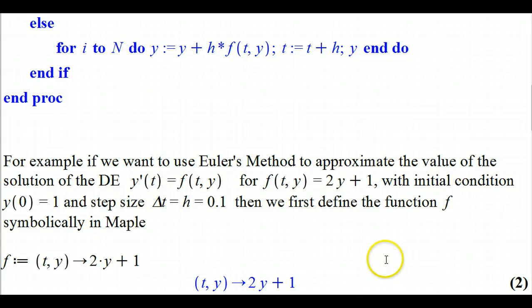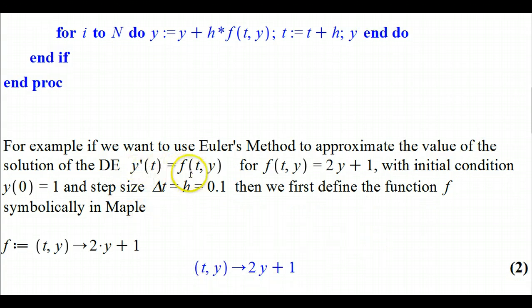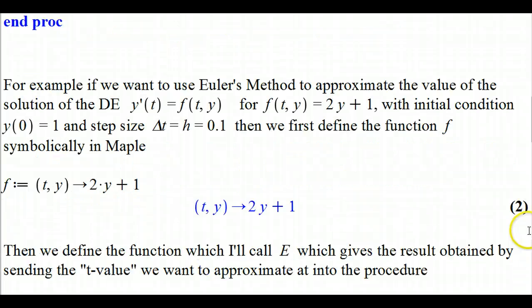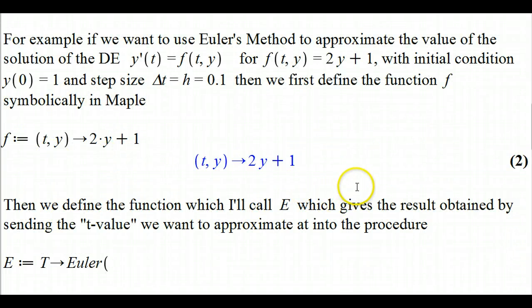So here's the differential equation we're going to solve. We're going to approximate the solution of this first order equation, where the right-hand side is 2y plus 1. Your initial condition is that your initial time is 0, your initial y value is 1, your step size is 0.1. So you first need to define the function f as we usually do in Maple.